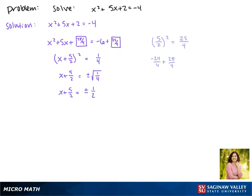Solving for x we get x equals negative 5 halves plus or minus 1 half. This can be evaluated, so we say x equals negative 5 halves plus 1 half, or x equals negative 5 halves minus 1 half.